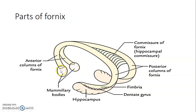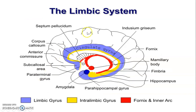Then other parts of the limbic system. Remember our amygdala is here and this is the hippocampus. That convolution is the dentate gyrus. This is the fimbria. So the amygdala is connected to the hippocampus. We said hippocampal formation is formed by hippocampus, dentate gyrus, and the indusium griseum. These are the posterior columns of the fornix, and these are the anterior columns of the fornix that connect with the mammillary bodies of the hypothalamus. Part of the limbic system — we have the amygdala here that connects with the hippocampus.